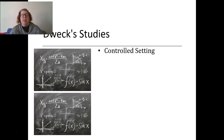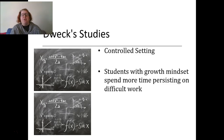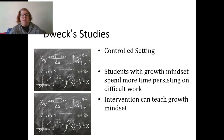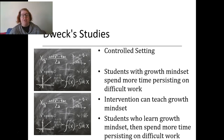Dweck's studies, in a controlled laboratory setting where she brought people in to do tasks in a controlled, intervention-group kind of design, found that students with a growth mindset — students who believed they could get better at something if they practiced — spent more time persisting on difficult work. They would ultimately become successful if they worked harder at it. Students with a fixed mindset would give up more easily and not ultimately be successful at the task. She also found that she could do an intervention and teach growth mindset — she could take people with a fixed mindset and turn them to a growth mindset by teaching them about it and doing an intervention. Those students who adopted a growth mindset, when given that difficult task again, would persist longer and ultimately become successful.